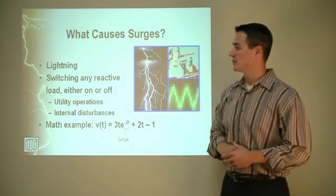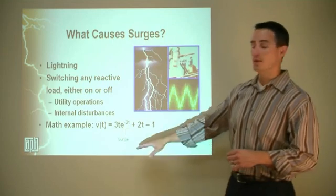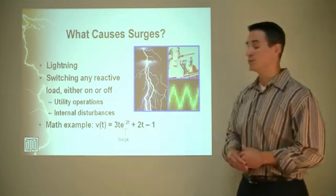Also, utility operations send out small surges. And for those that have a math background, there's actually a mathematical representation of a surge, and it's e to the negative 2t.